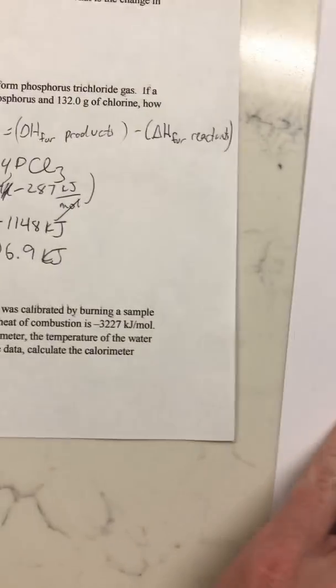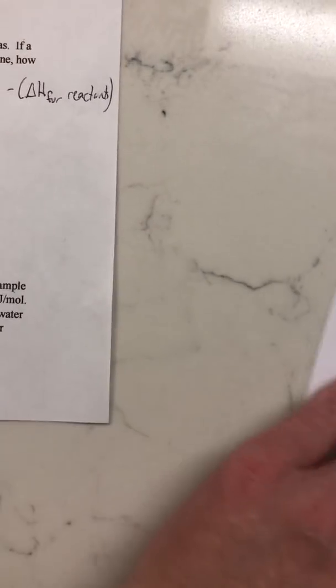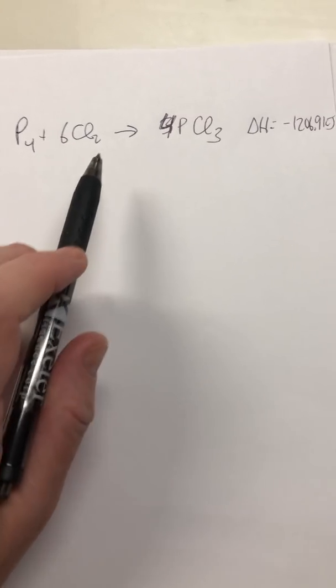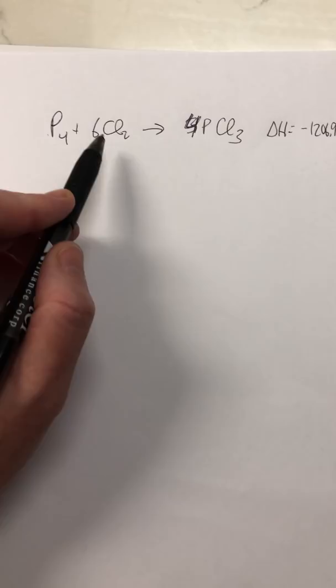Calculating that out gives negative 1206.9 kilojoules. What this tells us is that P4 + 6 Cl2 → 4 PCl3 has a delta H of negative 1206.9 kilojoules. So for every one mole of P4 reacting with six moles of Cl2, you get four moles of PCl3 and release 1206.9 kilojoules. It works like stoichiometry — we look at the coefficients: 1 to 6 to 4 to this enthalpy value.